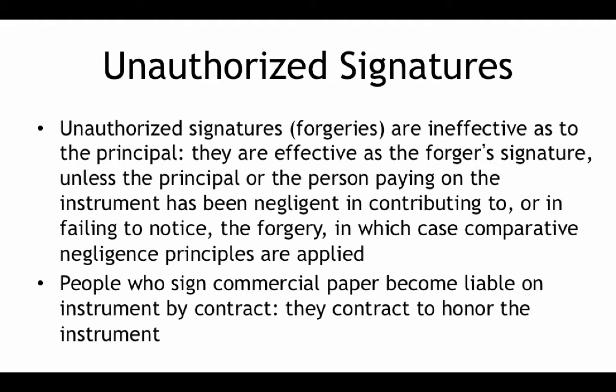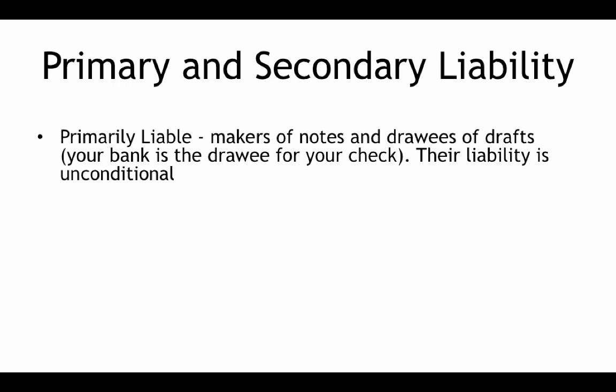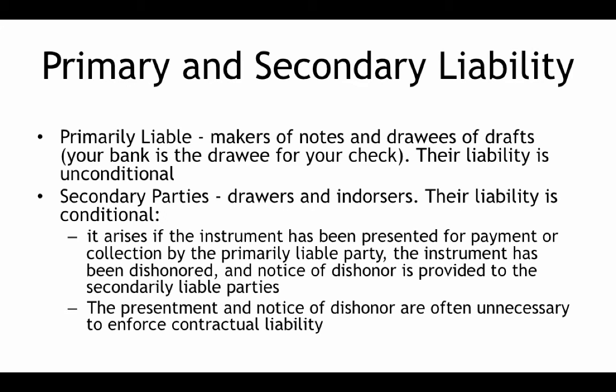People who sign commercial paper become liable on instruments by contract — they contract to honor the instrument. Another thing to look at is primary and secondary liability. Makers of notes and drawees of drafts have primary liability, and that liability is unconditional. Secondary parties include drawers and endorsers, and their liability is conditional. It arises if the instrument has been presented for payment or collection by the primarily liable party, the instrument has been dishonored, and notice of dishonor has been provided to the secondarily liable parties.